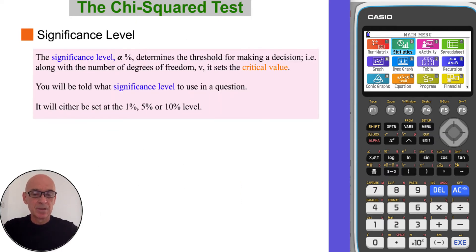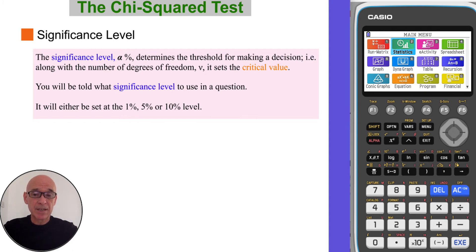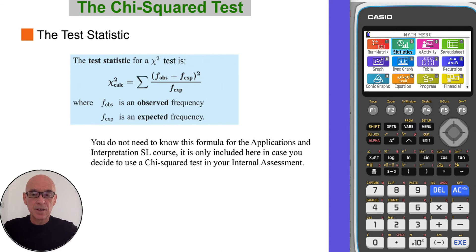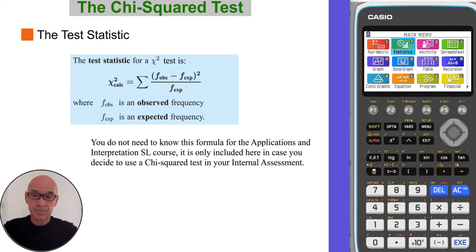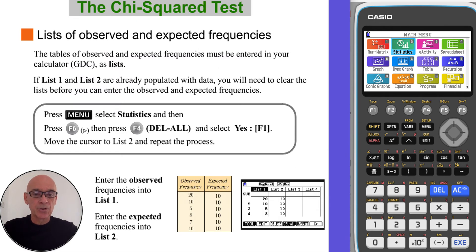The significance level determines the threshold for making a decision. Along with the number of degrees of freedom it sets what's called the critical value. You'll be told the significance level in the question — it'll either be 1%, 5%, or 10%. The formula for the test statistic is given here in case you decide to use a chi-squared test in your internal assessment, but for exams we will calculate the test statistic on the calculator. I'll show you how to do that now.